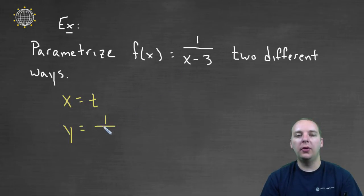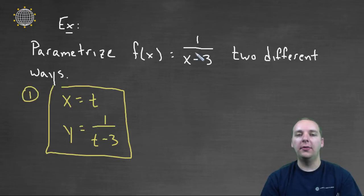Rather than one over x minus three, it'll simply be one over t minus three, and you're done. There's nothing more to do. So this is one parametrization of this function.